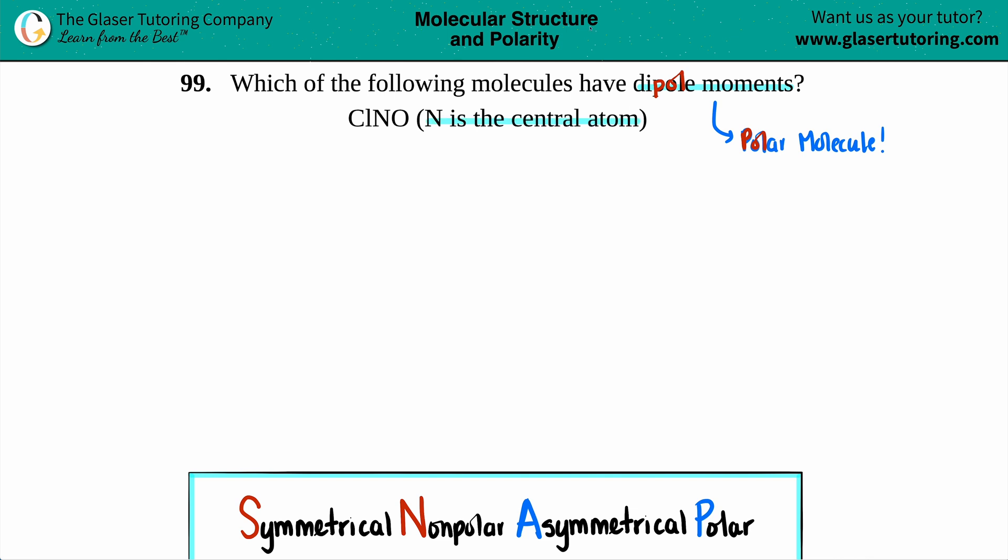Now they did tell us that nitrogen is the central atom, so between Cl, N, and O, nitrogen is in the middle surrounded by the chlorine and the oxygen. In order to make this work, chlorine has seven valence electrons, so it uses one to make a bond and the other ones are used for the octet rule.